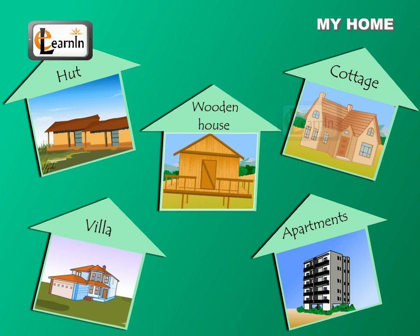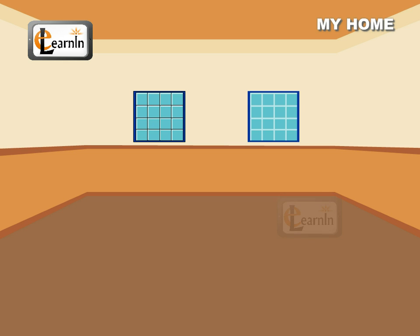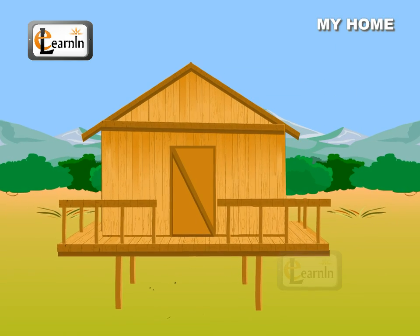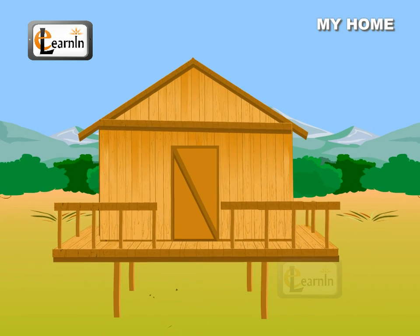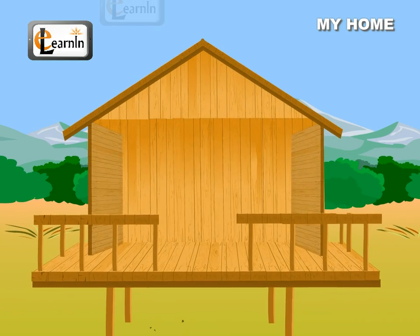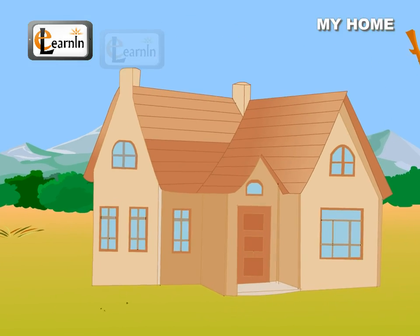A small attached hut is made out of mud and dried leaves. It has only one room in it and can be uncomfortable for a family. A wooden cabin is completely made out of logs of wood and can be of one or many rooms.